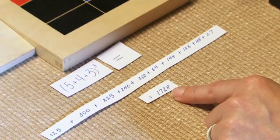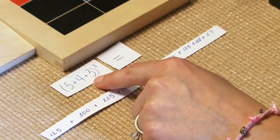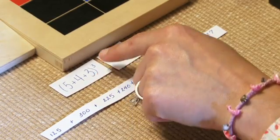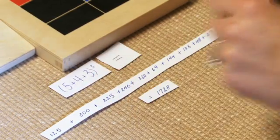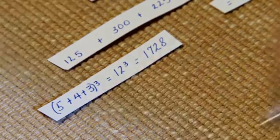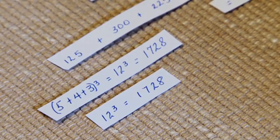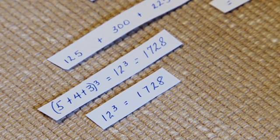To check their work, the students can go back up. Five plus four plus three equals 12. That would be cubed. 12 cubed is equal to 1728. They can check their work.